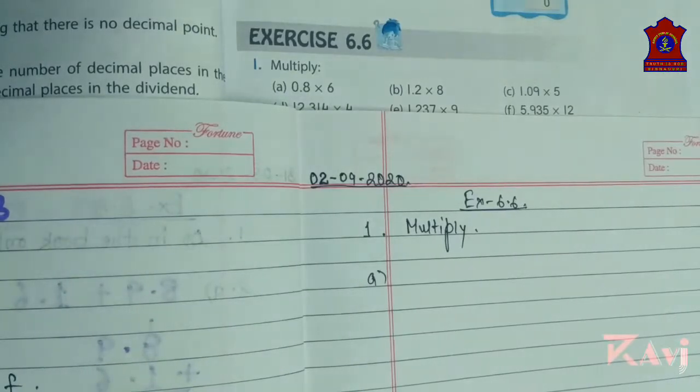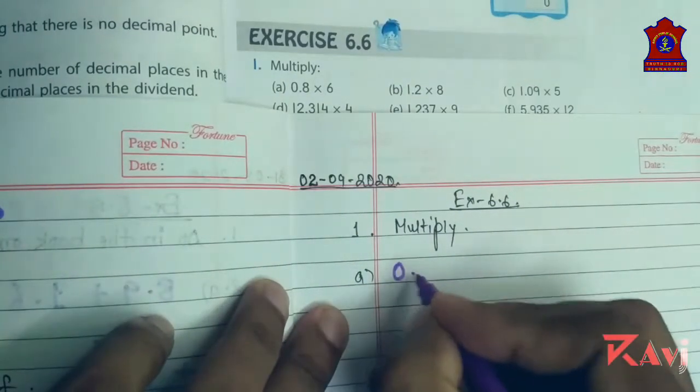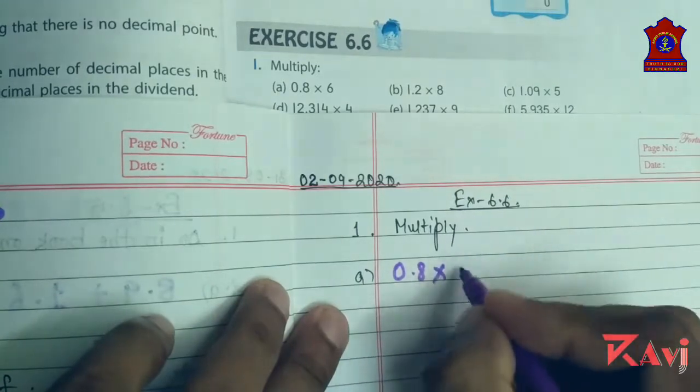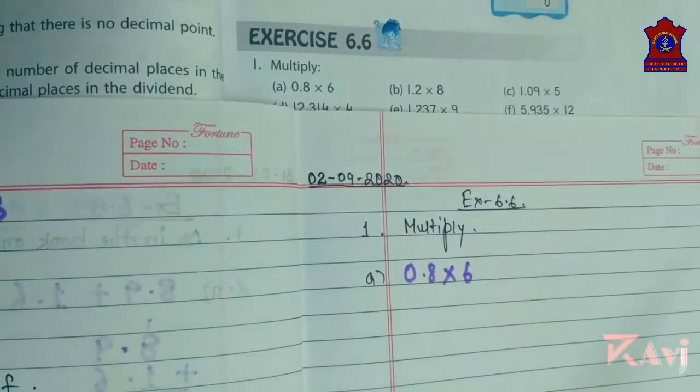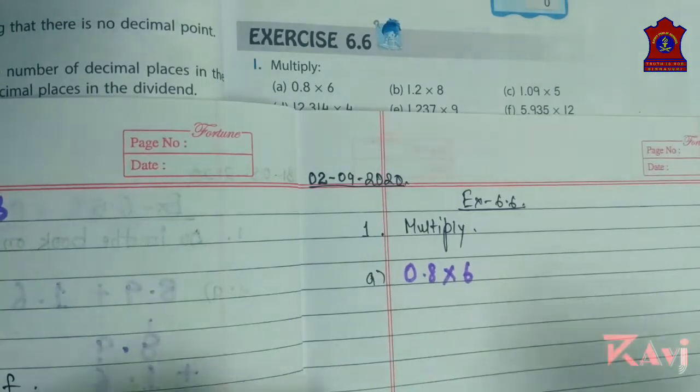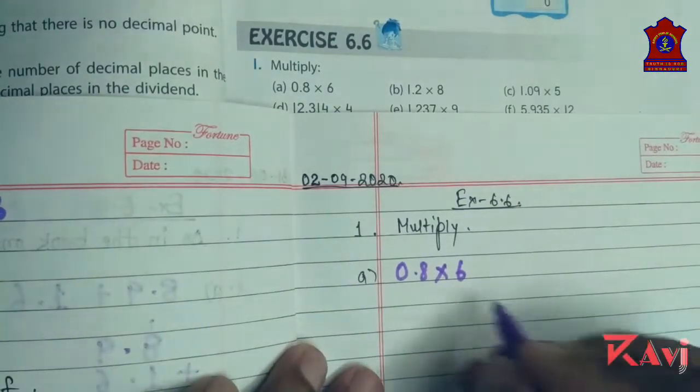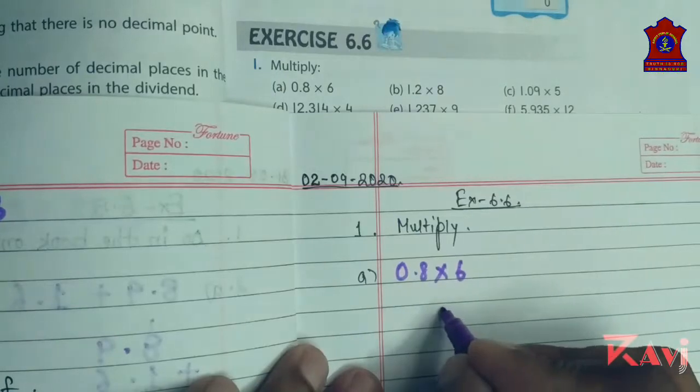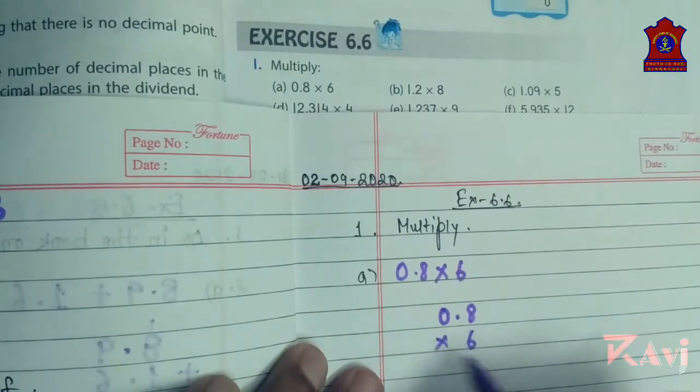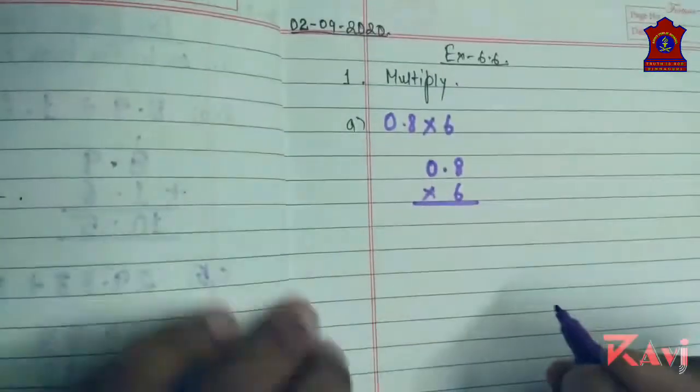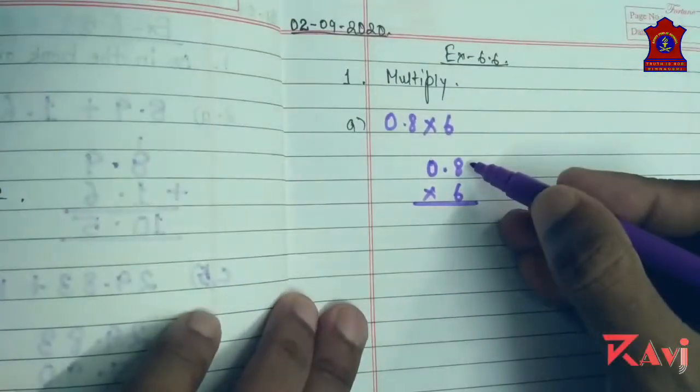0.8 multiplied by 6, you know we can easily multiply it after arranging it in column. Six eights are forty-eight, four goes here and six zeros are zero, so four.